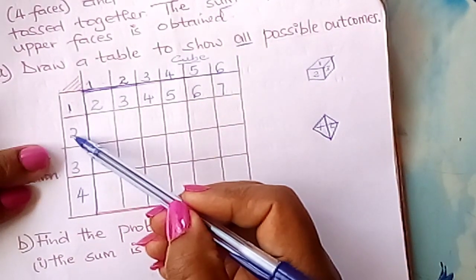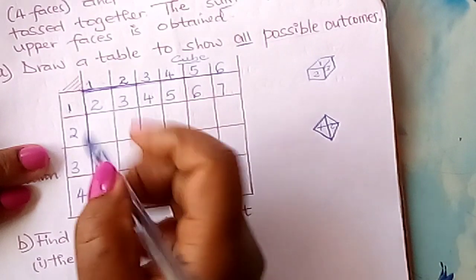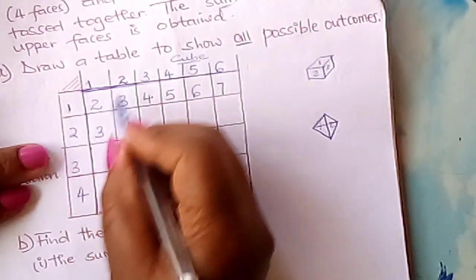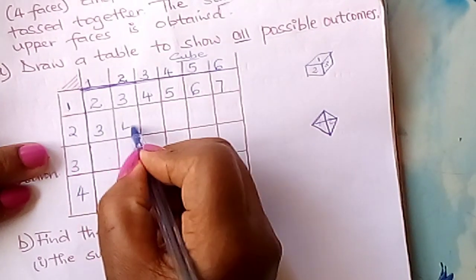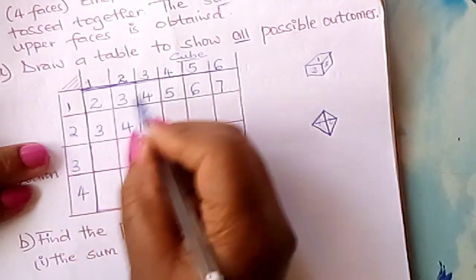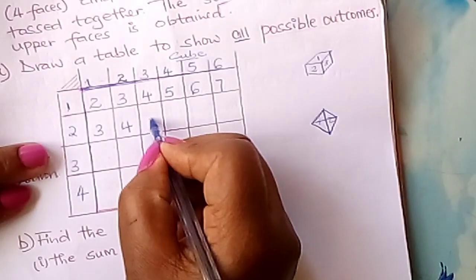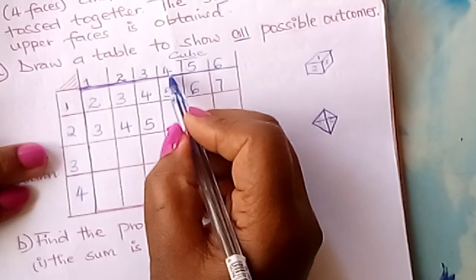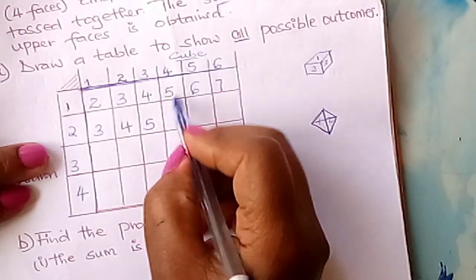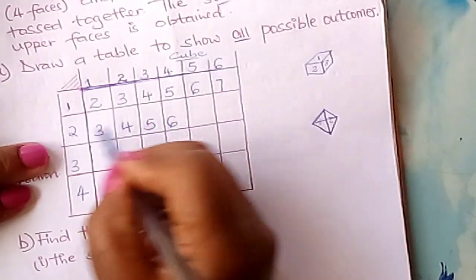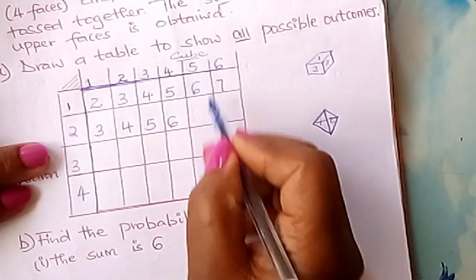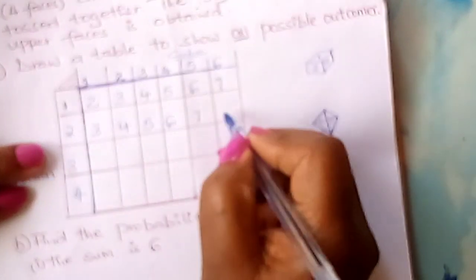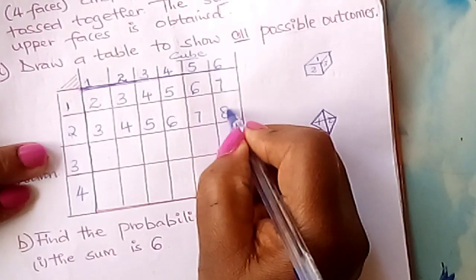For the second row: two plus one gives three; two plus two gives four; two plus three gives five; two plus four gives six; two plus five gives seven; two plus six gives eight.